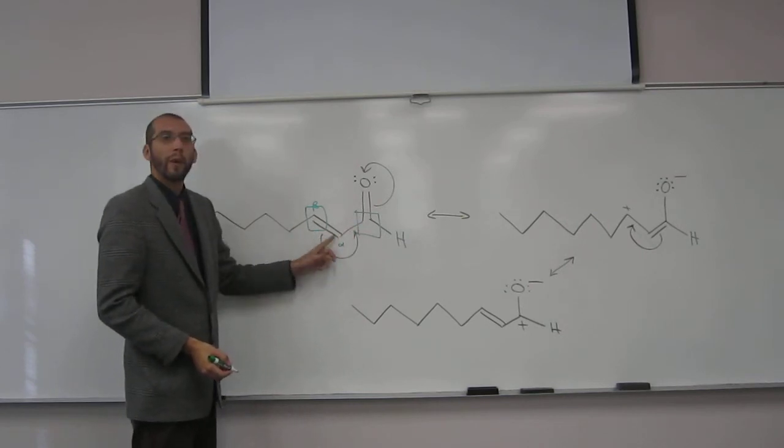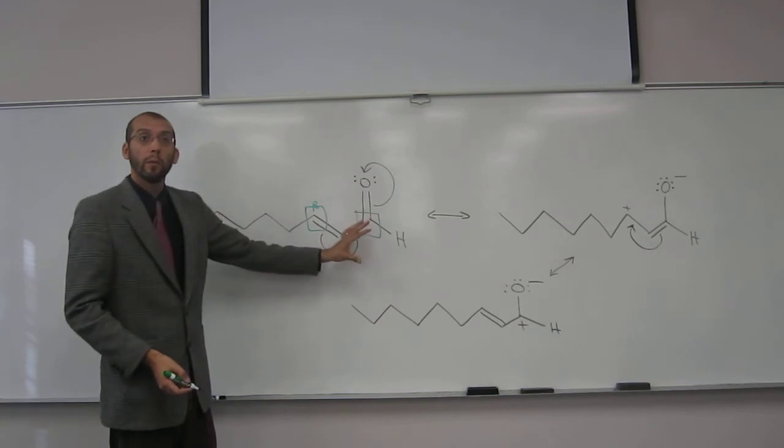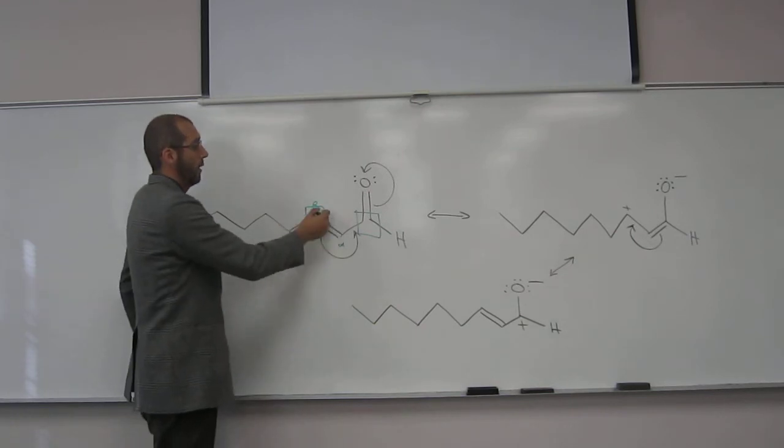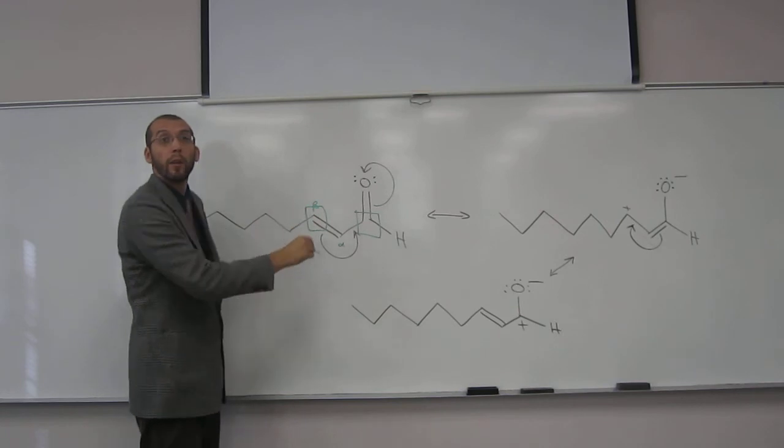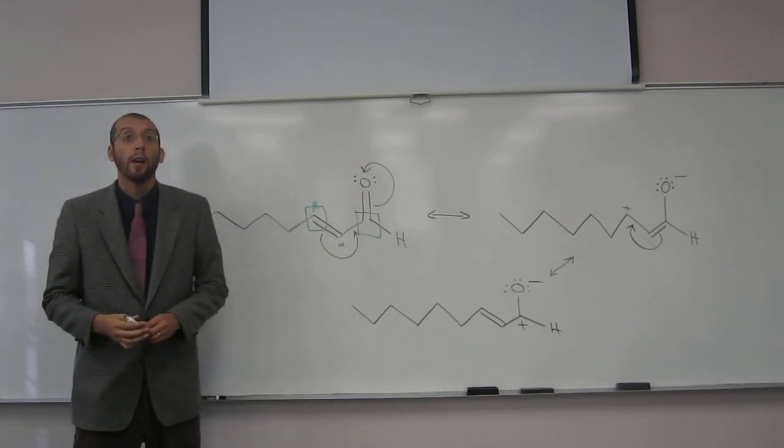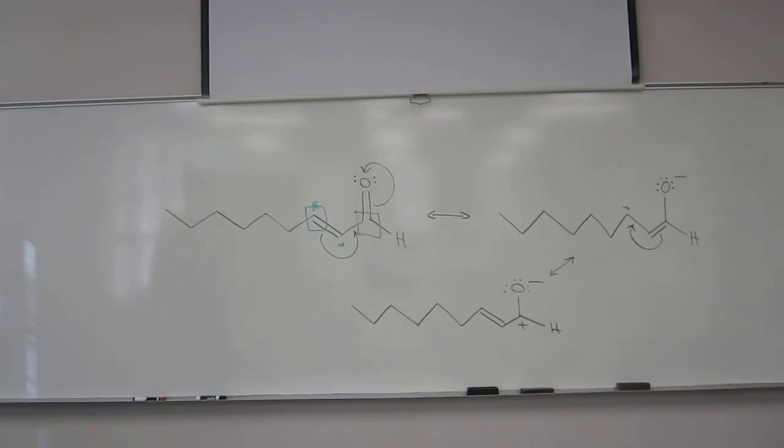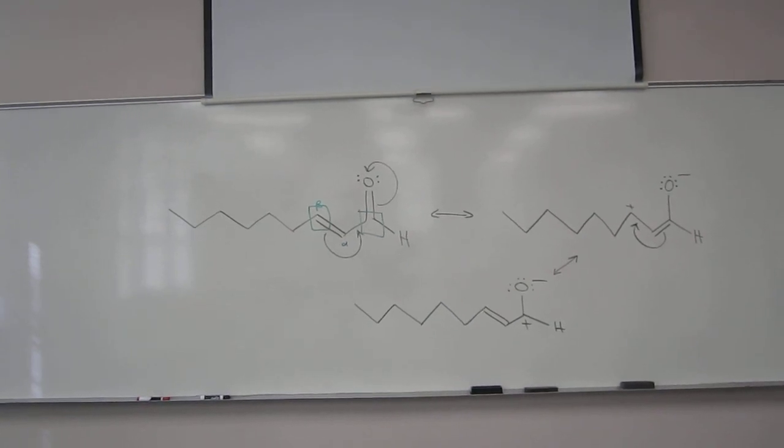If you have an alpha-beta unsaturated carbonyl group, remember unsaturated means doesn't have all the hydrogens on it - not an alkane portion. So alpha-beta unsaturated, that beta carbon is also electrophilic. So carbonyl carbons and the beta carbon from an alpha-beta unsaturated carbonyl is electrophilic. Just the beta carbon.